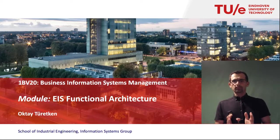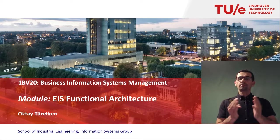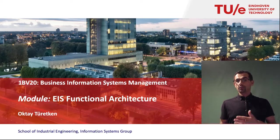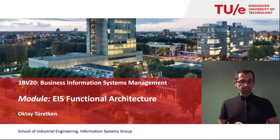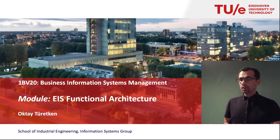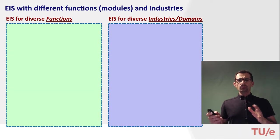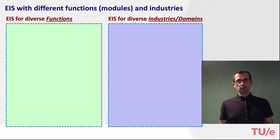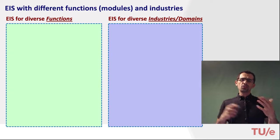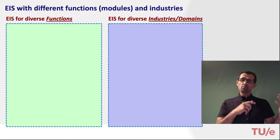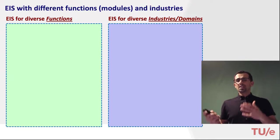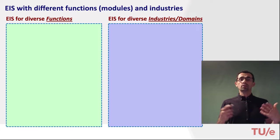In this module we'll focus on the functional architecture of enterprise systems, which follows the column style as we have seen in the previous video of this series. Over the years, enterprise systems have proliferated to cover almost all functions of modern organizations. We see such systems not only as generic ones with several special functions but also specialized to support specific processes in certain business domains or industries.